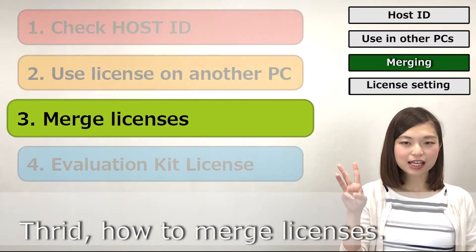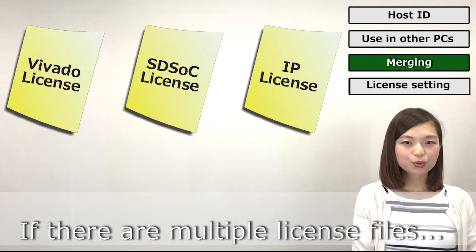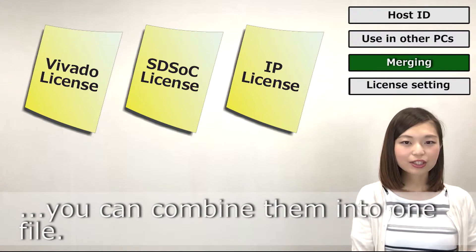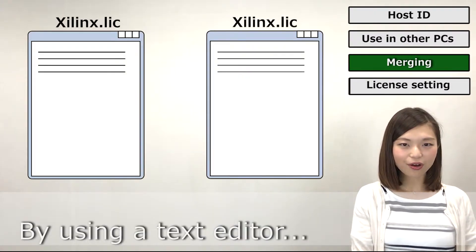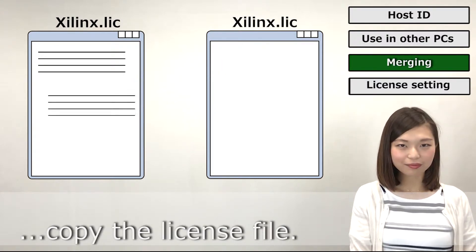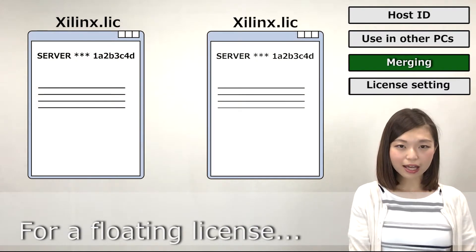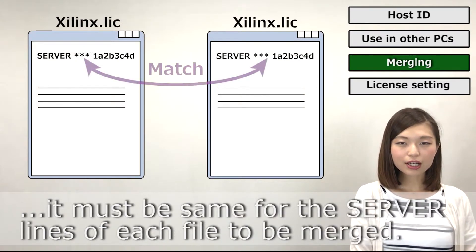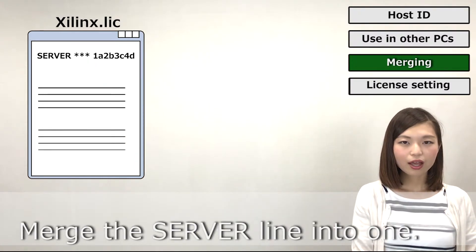Third, how to merge licenses? If there are multiple license files, you can combine them into one file. By using a text editor, copy the license file. For a floating license, it must be saved with the server line of each file marked. Merge the server lines into one.